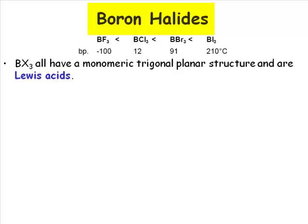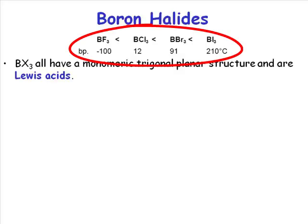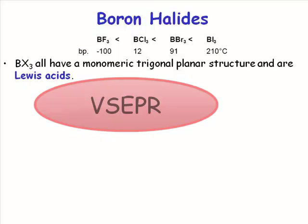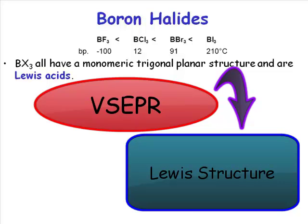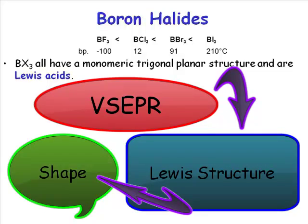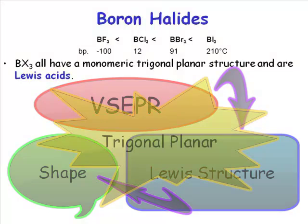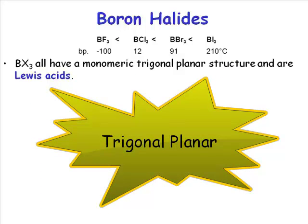The boron halides' properties tend to reflect their molecular weight. As you go up in molecular weight, you get a less and less volatile material. If you were to do a VSEPR analysis on the boron halides — drawing a Lewis structure and then using that to predict the shape of the molecule — you would conclude that all the boron halides would be trigonal planar in shape. And indeed, they are.